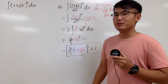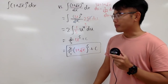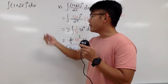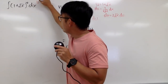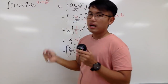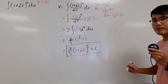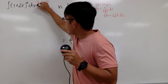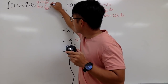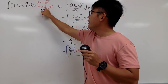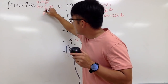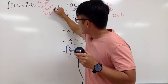Now let's look at the first integral. I'll approach it the same way using u-sub. I let u equal the inside, namely 1 plus square root of x. Differentiating both sides, du equals 1 over 2 square root of x dx. Multiplying both sides, dx equals 2 square root of x du.